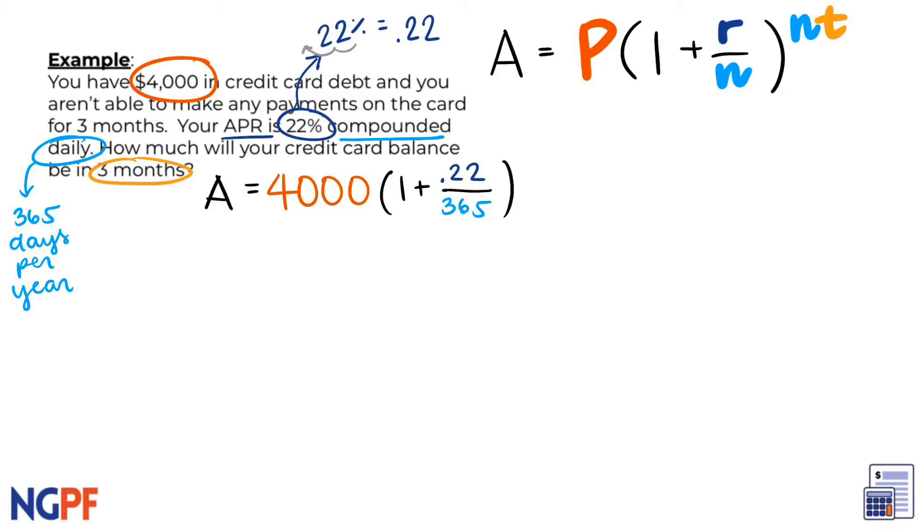Finally, for the exponent, we need N once more, which we know is 365. Then we will multiply by T, or time in years. Since three months is one quarter of a year, we can put one-fourth as T.